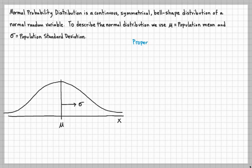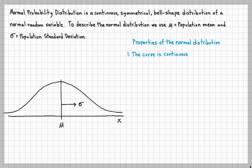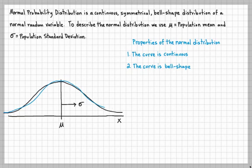Let's talk about some of the properties of the normal distribution. The first property is the curve is continuous, which means it's a smooth curve. The second property is the curve is bell-shaped — it has that bell shape to it, not square or anything like that.